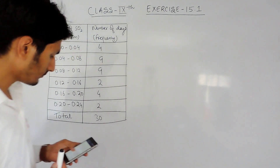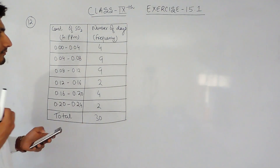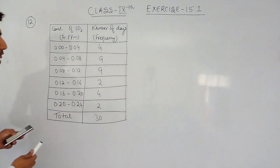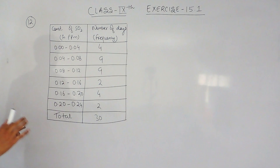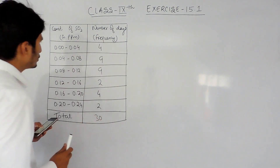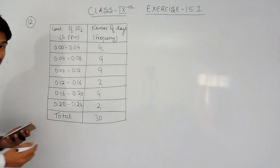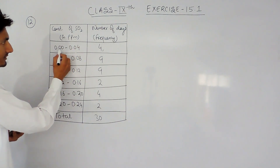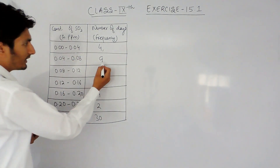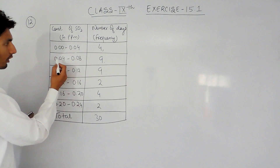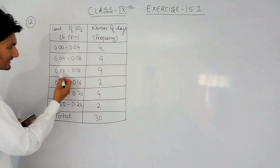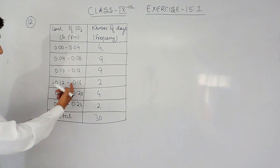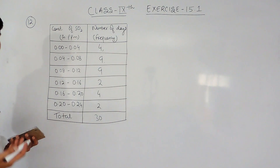So in that question, when we are asked to make a table, this is the table where we find the concentration of SO₂ in air for 30 days. For 4 days the concentration was 0.00 to 0.04, for 9 days it was 0.04 to 0.08, for 9 days it was 0.08 to 0.12, and for 2 days the concentration was 0.12 to 0.16 in parts per million.